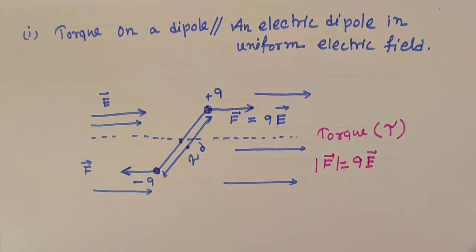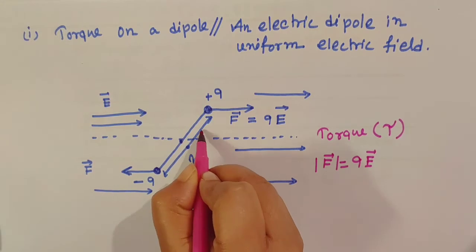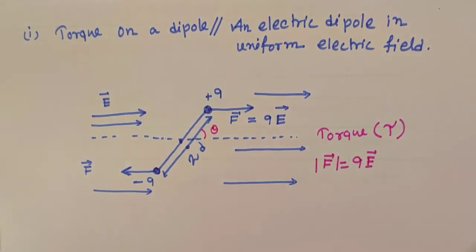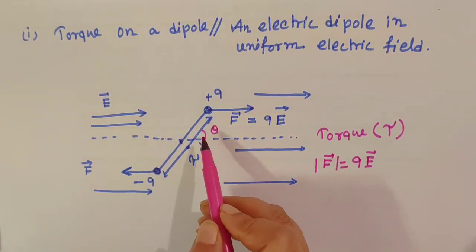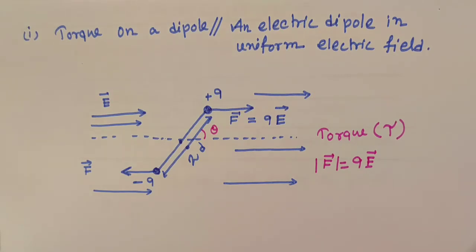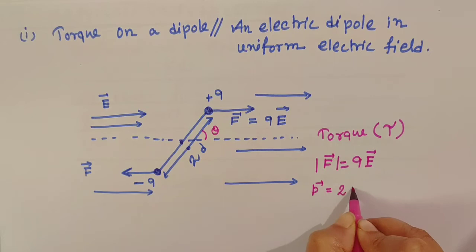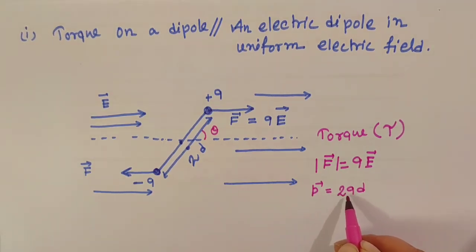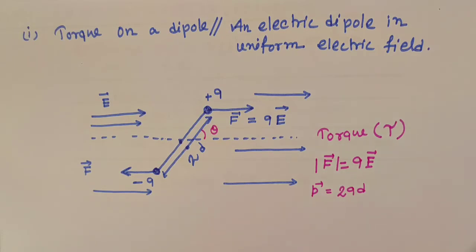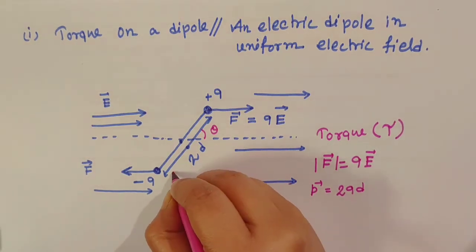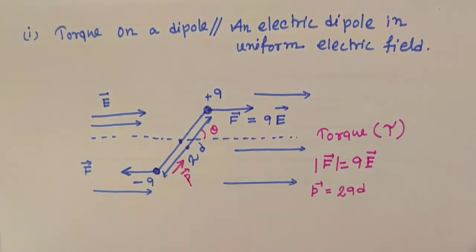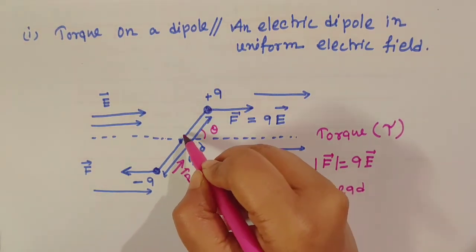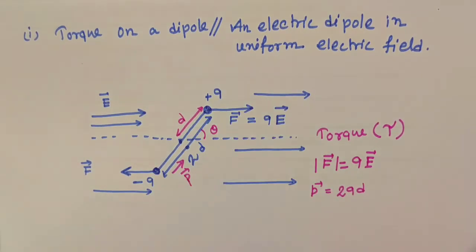Let the dipole make an angle theta with the direction of E. So let this angle be theta. This dipole makes an angle theta with the direction of E. At any instant of time, this implies that the dipole moment vector P - we know P is equals to 2QD from previous videos - is also inclined at an angle theta. The half of this length is D, and this full length is 2D.